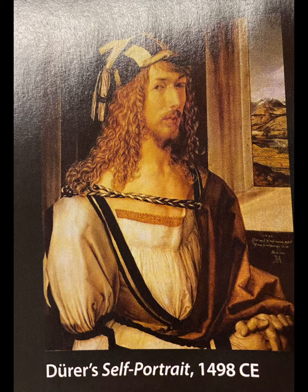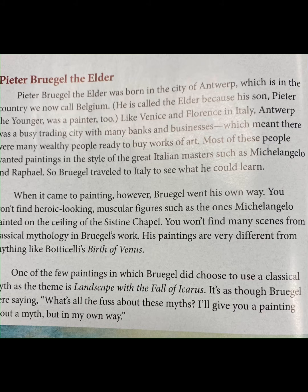Pieter Bruegel the Elder was born in the city of Antwerp, which is in the country we now call Belgium. He is called the Elder because his son, Pieter the Younger, was a painter too. Like Venice and Florence in Italy, Antwerp was a busy trading city with many banks and businesses, which meant there were many wealthy people ready to buy works of art. Most of these people wanted paintings in the style of the great Italian masters, such as Michelangelo and Raphael.